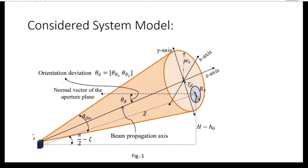This is the considered system model. This figure shows an optical uplink setup where a ground station transmits an optical signal toward an aerial platform. Capital H is the altitude of the receiver, small h0 is the altitude of the transmitter, Ra is the aperture radius of the receiver, zeta is the zenith angle of the aerial node, theta_d is the orientation deviation, z is the minimum distance between transmitter and receiver, and Wz is the beam width at distance z from the transmitter.